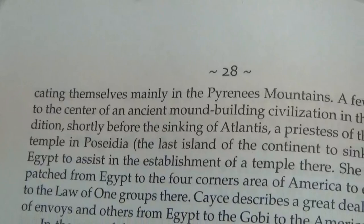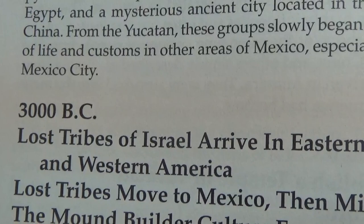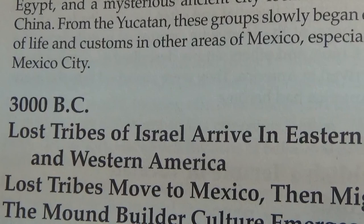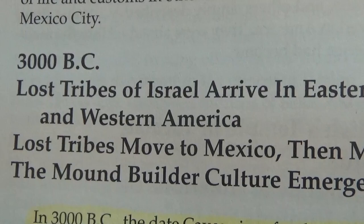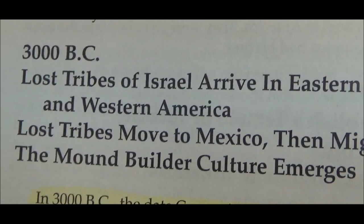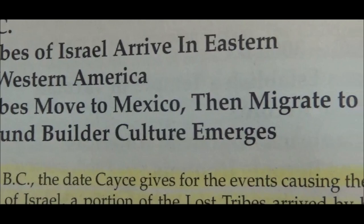I want to take you to page 28 and drop down where it says 3000 BC. Now around 3000 BC, this was the time when the Israelites actually fled from Egypt — from the time of Shem having his children to the time of the Israelites fleeing out of Egypt into the wilderness and migrating their way into the promised land. So there were always Israelites who wanted to do their own thing. The archaeologists say: 'Lost tribes of Israel arrived in eastern and western America. Lost tribes moved to Mexico, then migrated to Ohio. The mound builder culture emerges.'